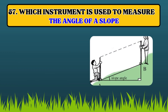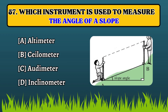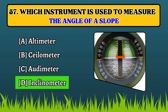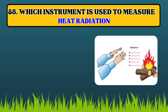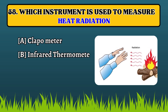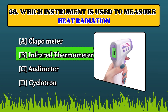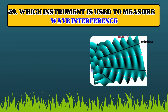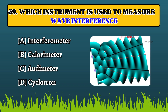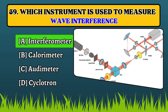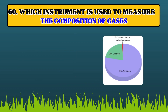Which instrument is used to measure the angle of a slope? Inclinometer. Which instrument is used to measure heat radiation? Infrared thermometer. Which instrument is used to measure wave interference? Interferometer. Which instrument is used to measure the composition of gases?